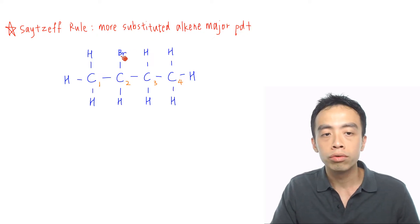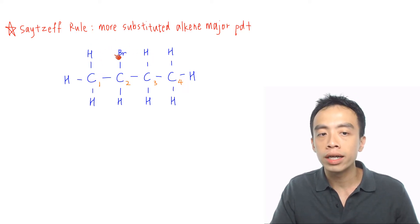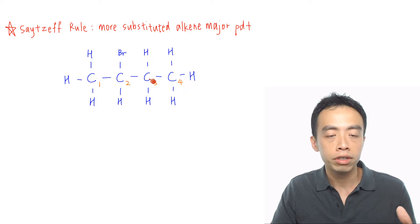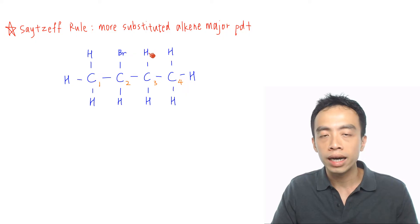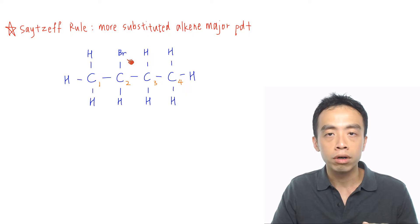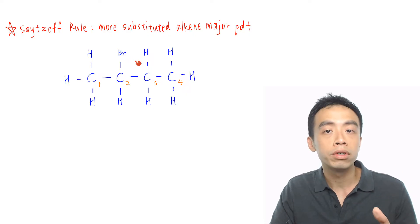So if we look at this compound you notice this Br is on my second carbon, and you notice we actually have two different hydrogens that can be eliminated together with this Br. Now this carbon one is a methyl group, then this carbon number three is my CH2 group, so carbon position one and carbon position three, they're different. So if I eliminate this hydrogen with my Br, I'll form one alkene. If I remove the other hydrogen from Br, I'll form another alkene. We get two different products.